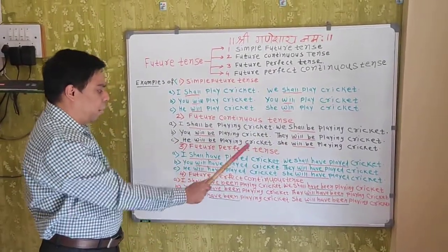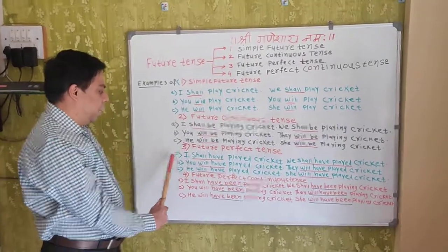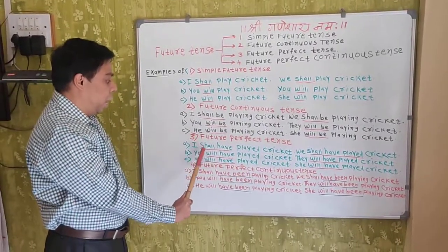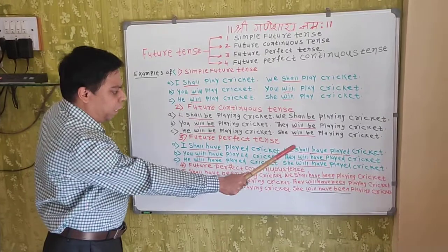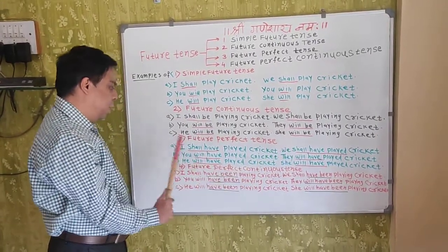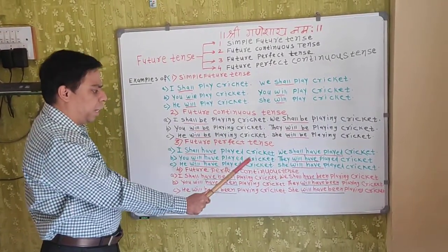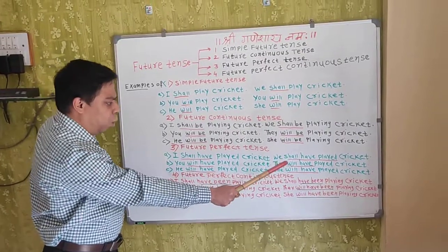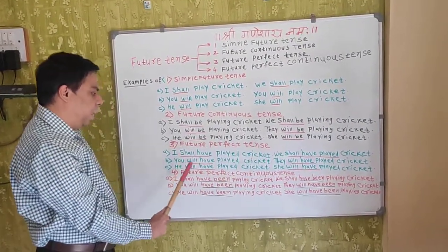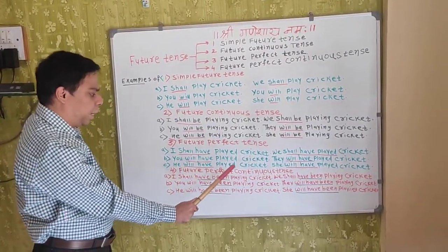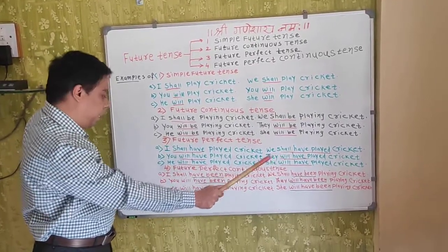Future perfect tense. Example. I shall have played cricket. We shall have played cricket. You will have played cricket. They will have played cricket. He will have played cricket. She will have played cricket.